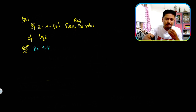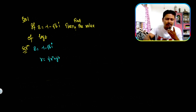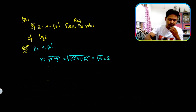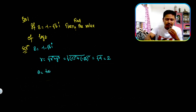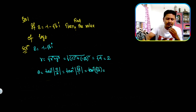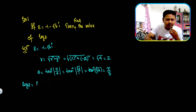Given complex number z equals minus 1 minus square root of 3 times iota. We find R equals square root of x squared plus y squared equals square root of (−1)² plus (−√3)² equals square root of 4 equals 2. The value of theta-not is tan inverse of y by x equals tan inverse of (−√3 divided by −1) equals tan inverse of √3, which gives 60 degrees. Then log z equals ln R plus iota times (2nπ plus theta).